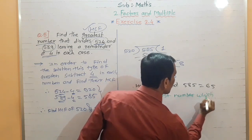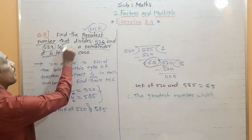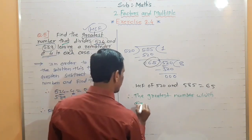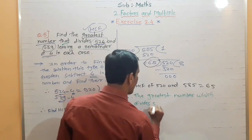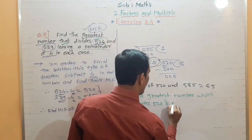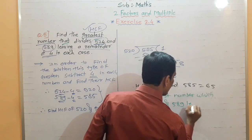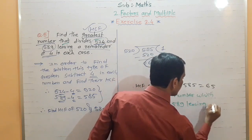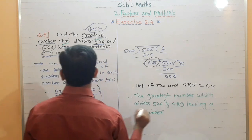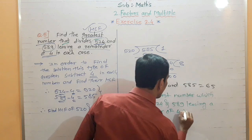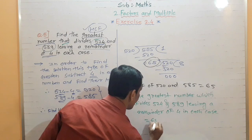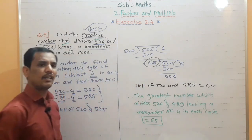The last line reads: 'The greatest number which divides 524 and 589 leaving a remainder of 4 in each case is equal to 65.' So that is our answer — 65. I am using a different pen to highlight this so students can see it clearly. This is our last concluding line.